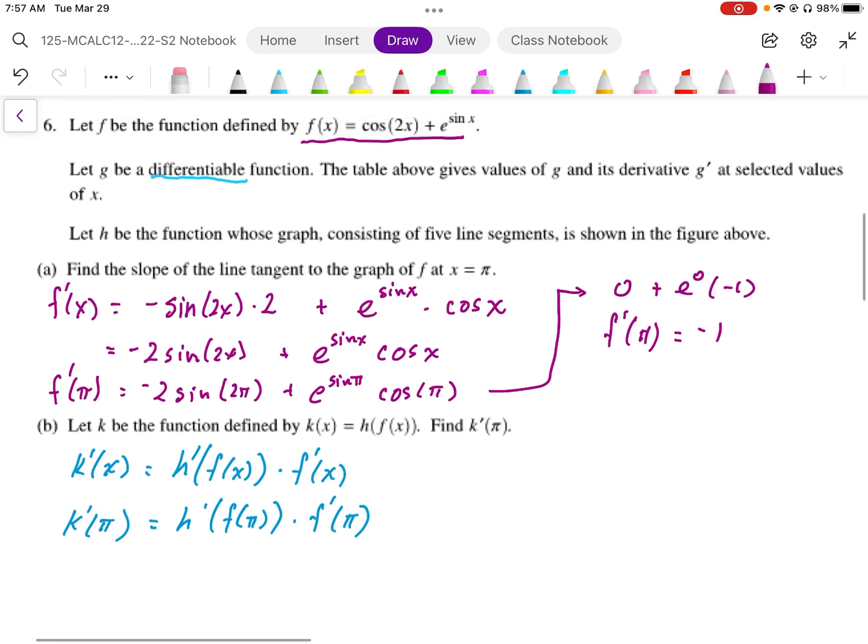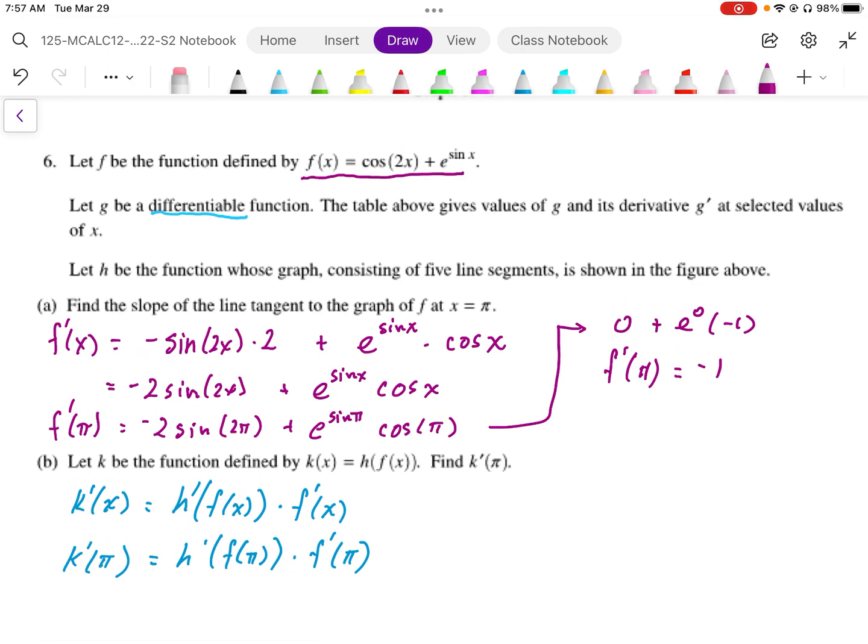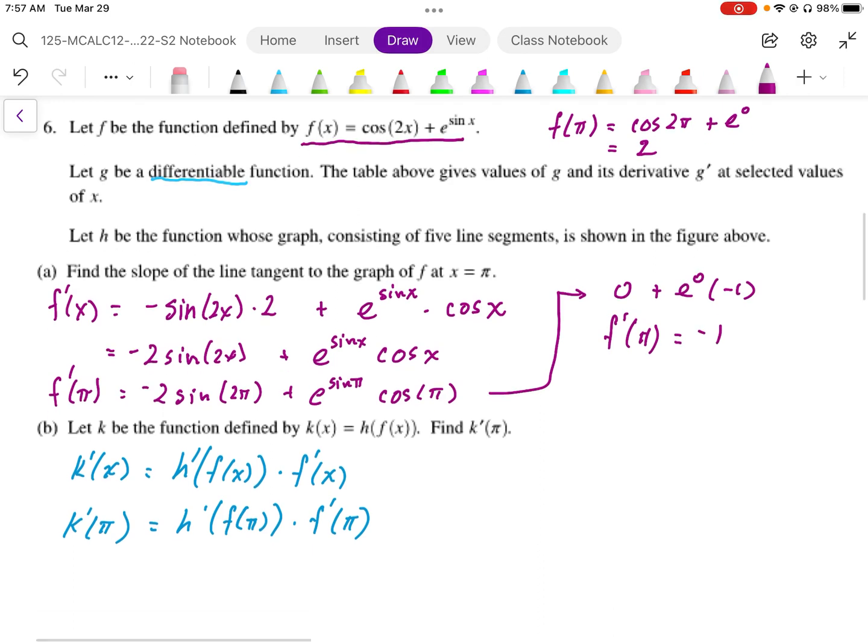We need to find f of pi. So looking at this expression here above, f of pi. When I evaluate the f value at pi, it's going to be cosine of 2 pi. That's going to be 1 plus e to the sine pi, which is 0. And so I end up with a value of 2. So f pi is equal to 2. So then I'm going to embed this into my expression.